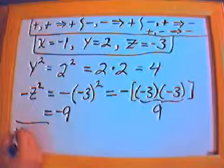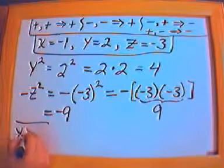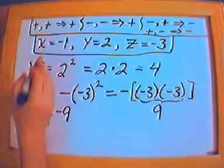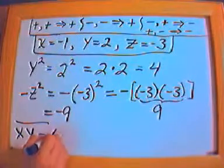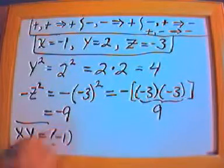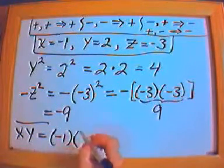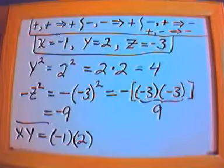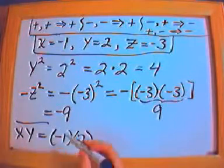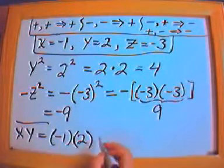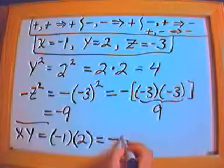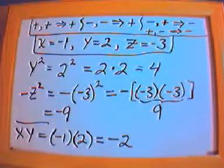Let's say you have xy, which is x times y — that equals x which is negative 1 times y which is 2. Negative times positive is negative, and negative 1 times 2 is 2, so you get negative 2.